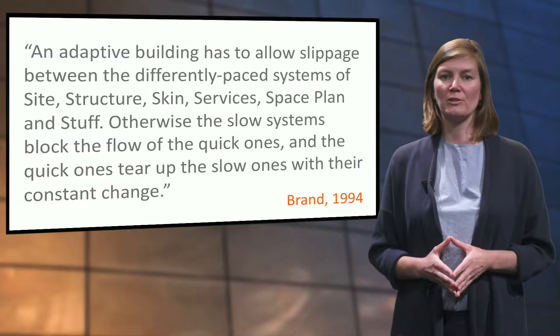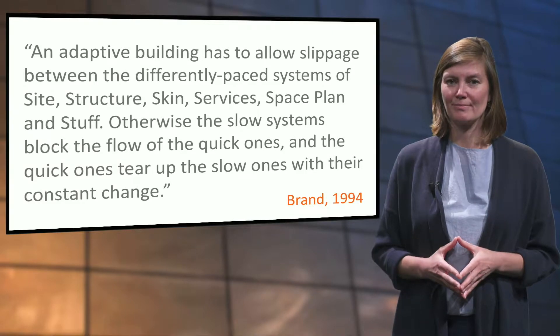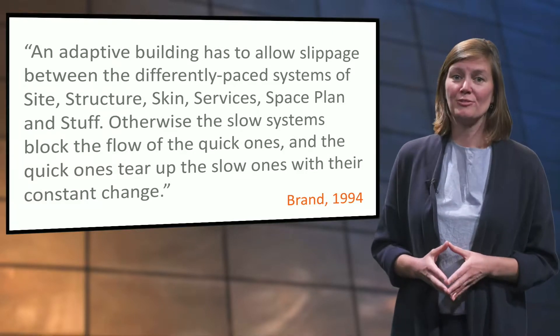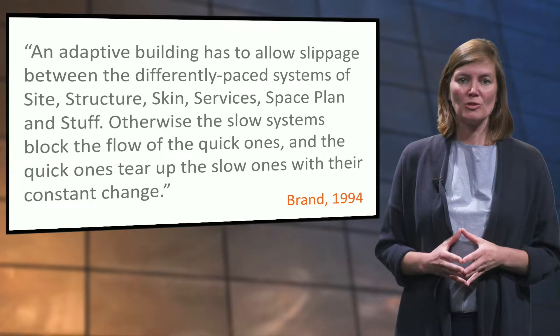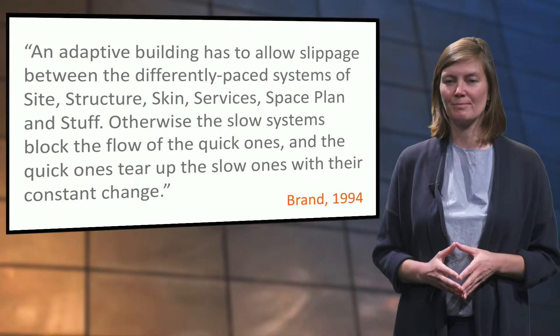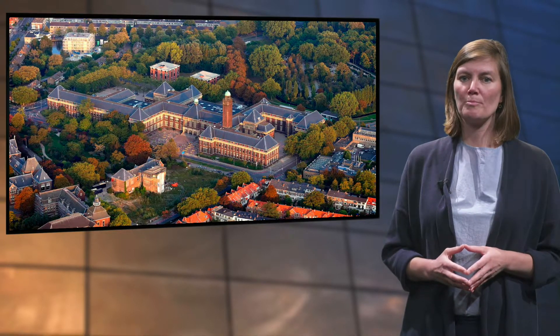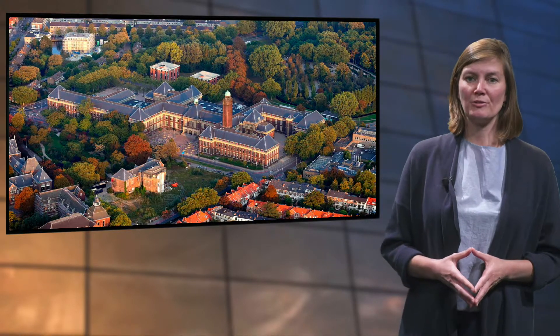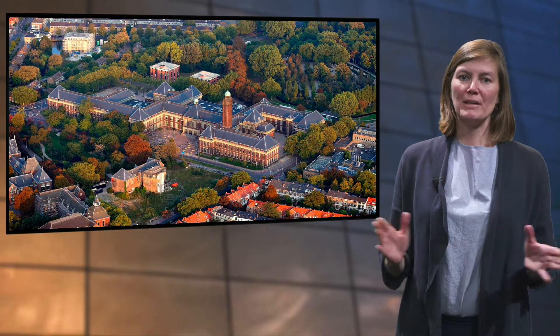Understanding the layer logic of a building enables us to make circular design choices from the start. We will look at the different shearing layers of a building by taking BK City, our almost 100-year-old faculty building, as a case study. BK City is a good example of adaptive reuse, since it has been transformed many times during its lifetime.